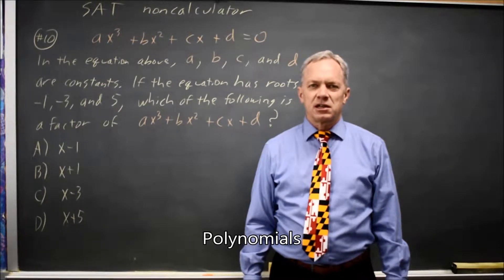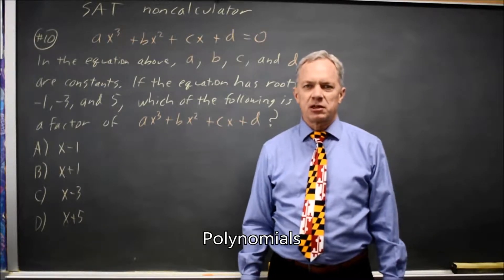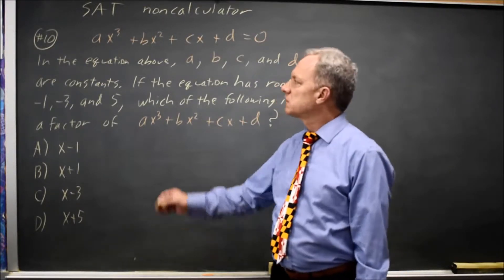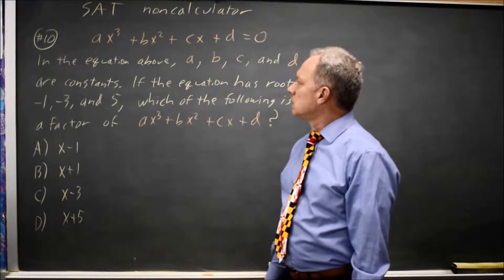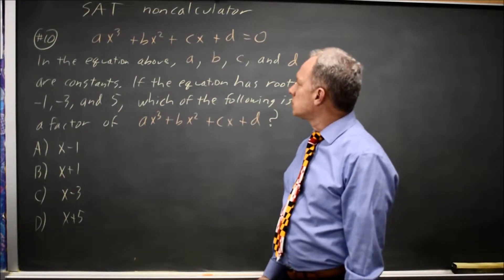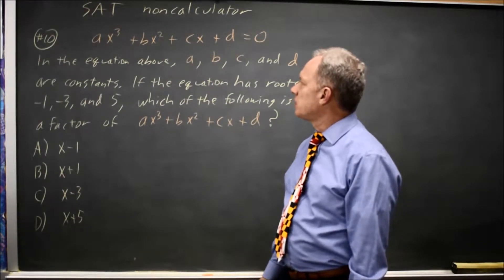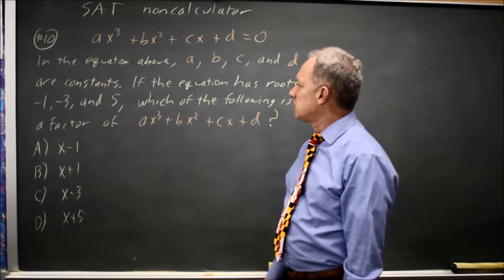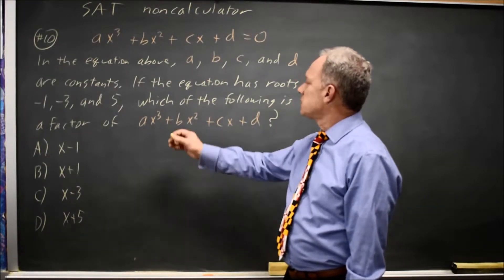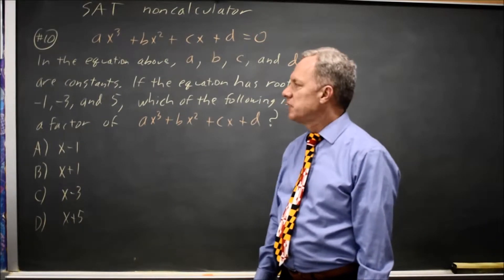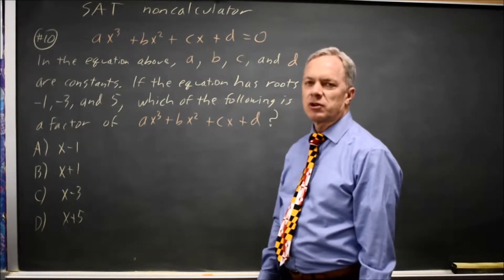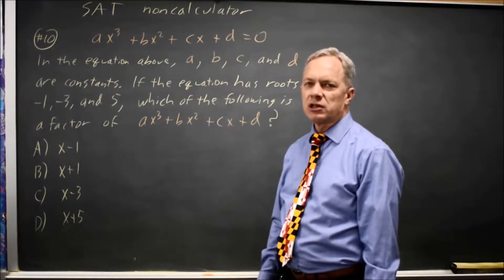This is non-calculator question number 10. College Board gives us a cubic polynomial with coefficients a, b, c, and d constant, and says the polynomial has roots negative 1, negative 3, and 5.